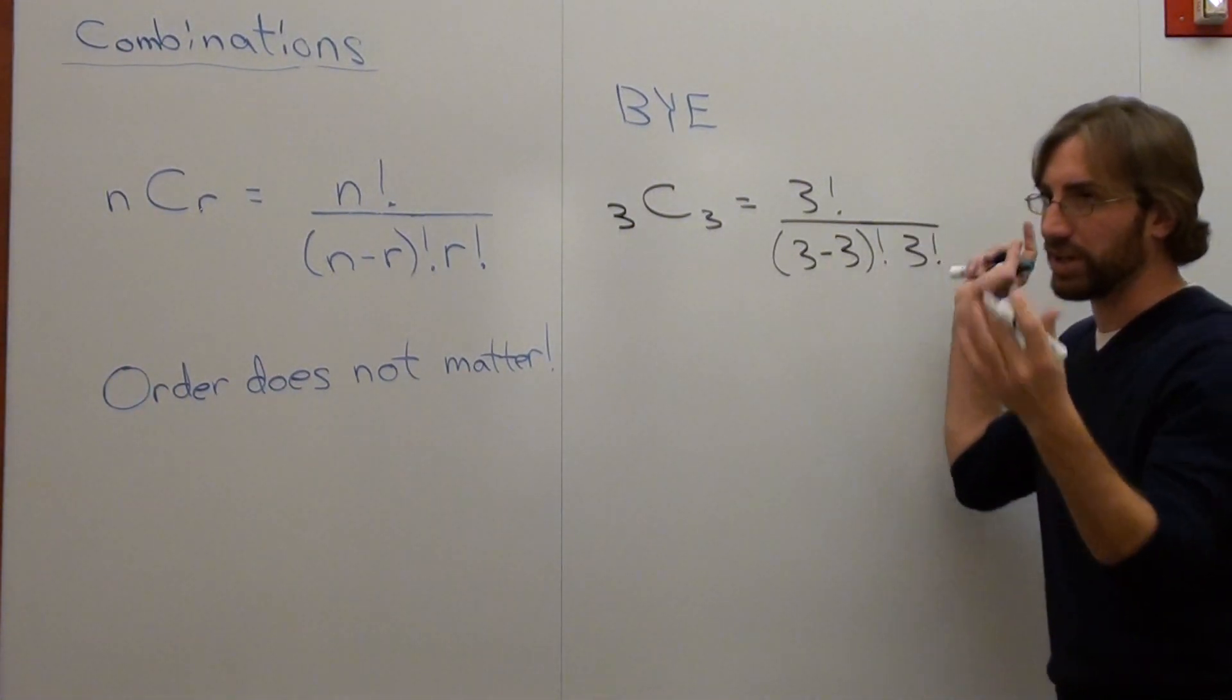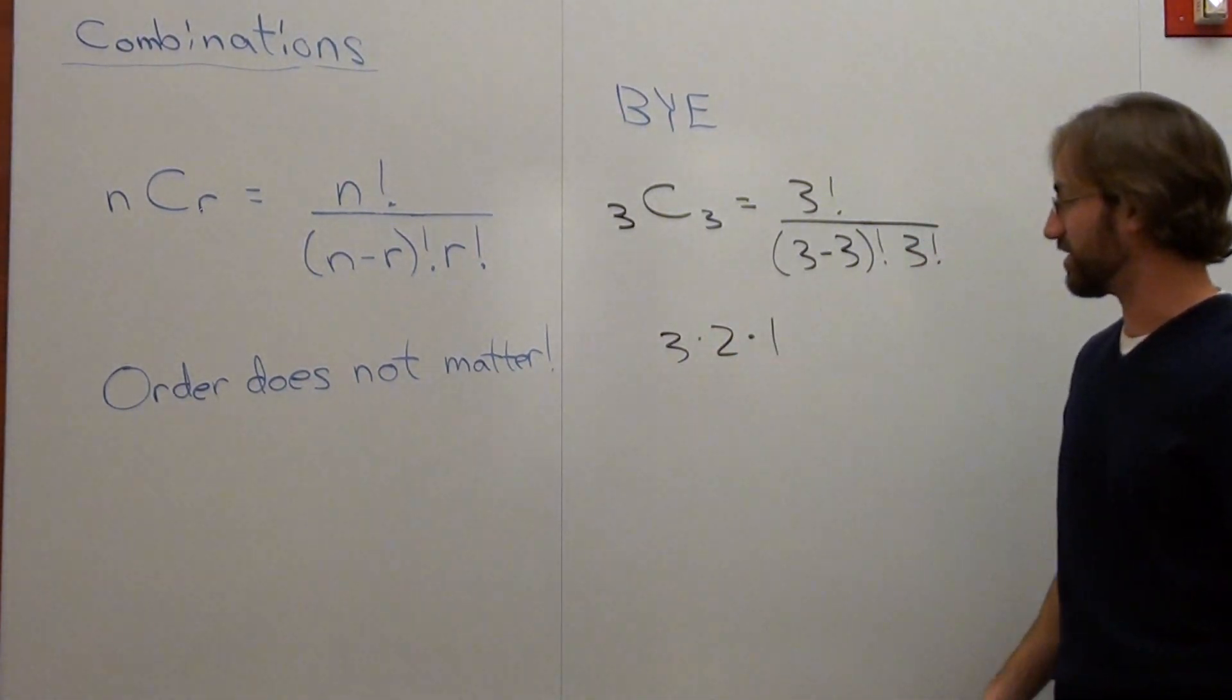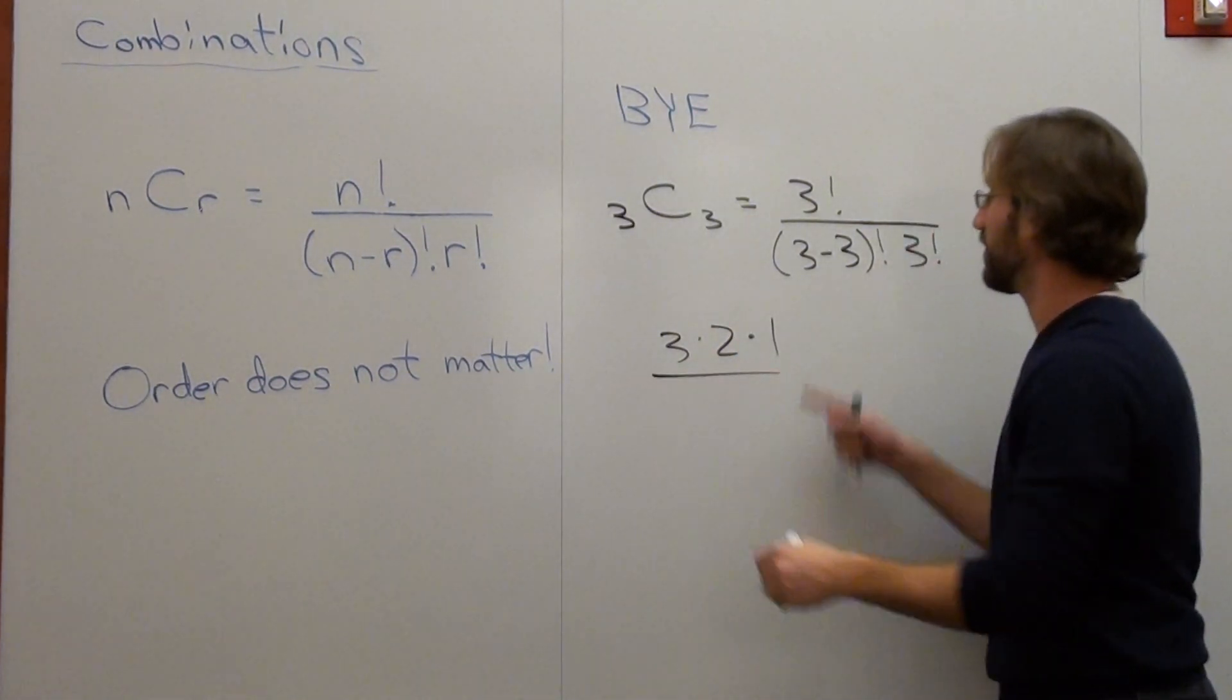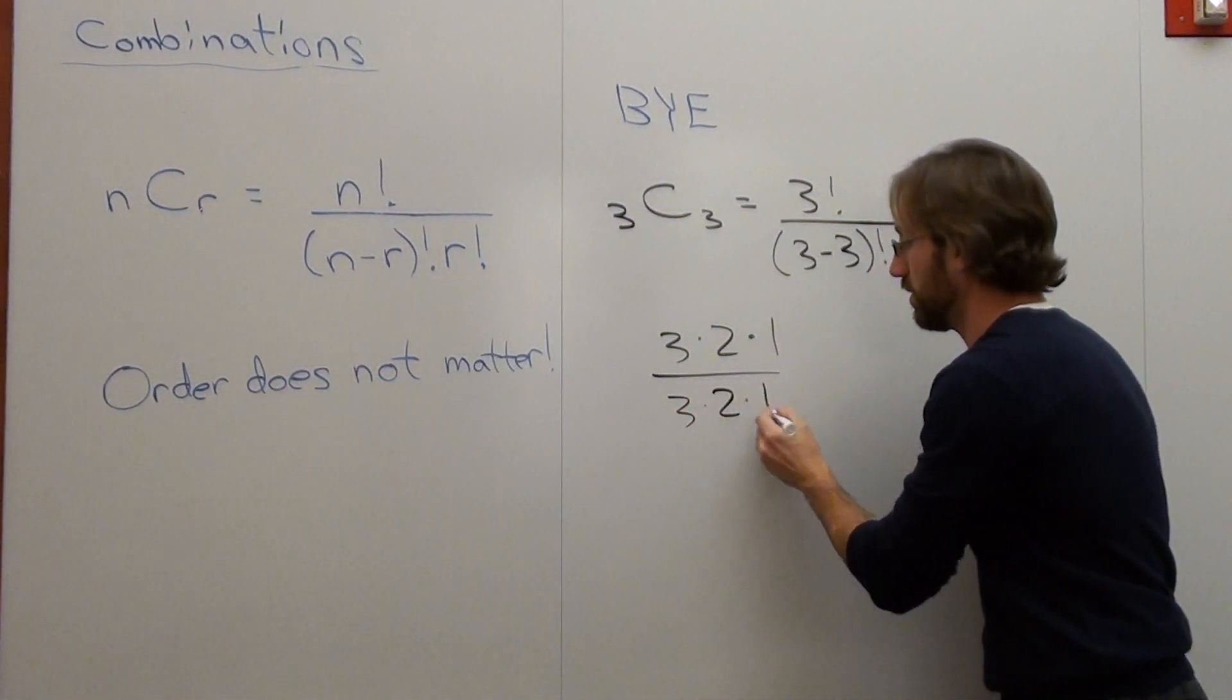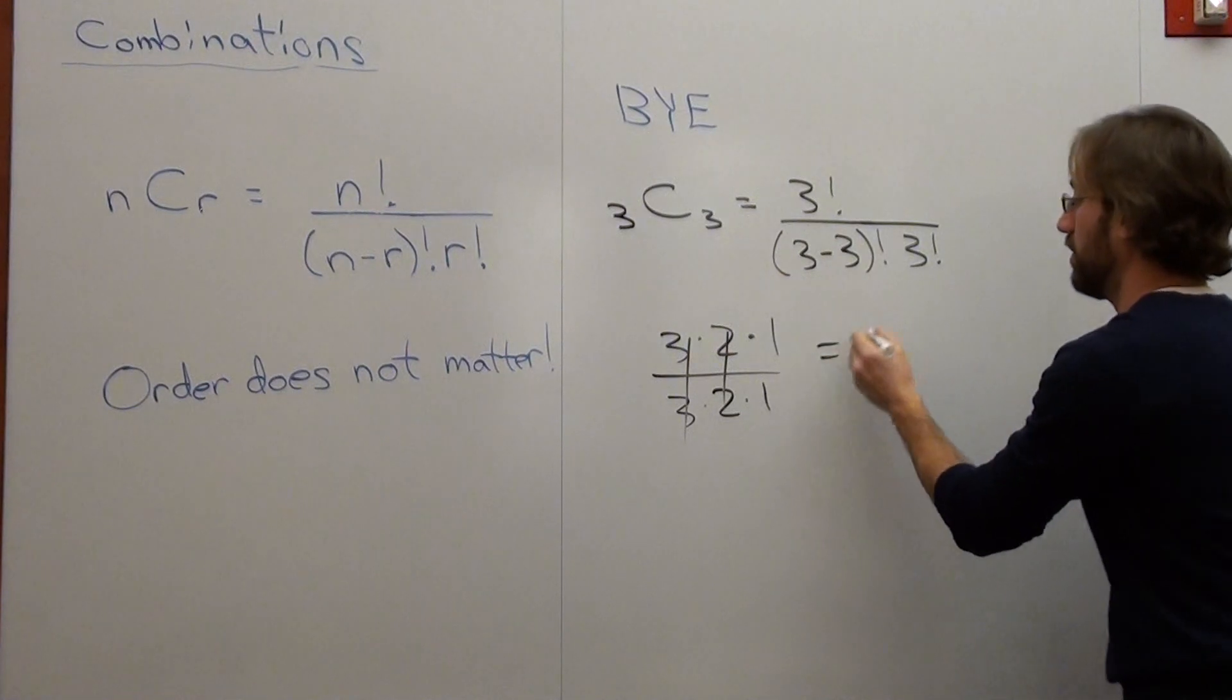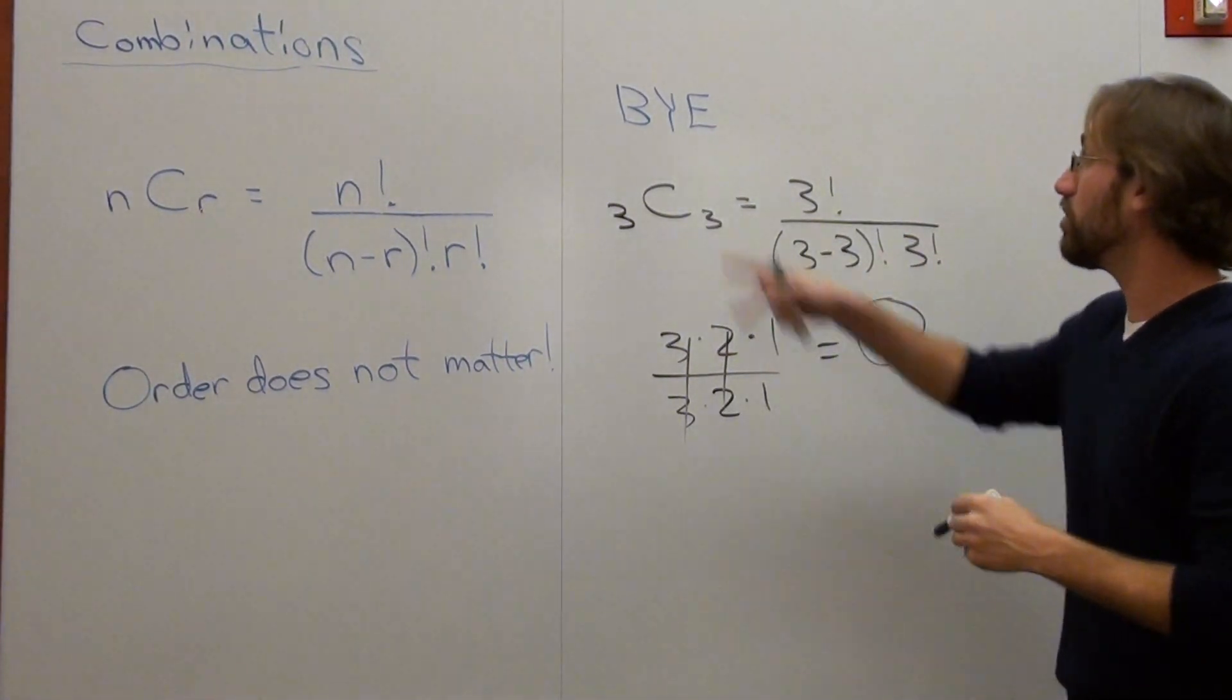Times 3 factorial. So this is just a 1, it's arbitrary. So it's 3 times 2 times 1. Pardon, there's something flying there. Over, that's just 1, over 3 times 2 times 1. Answer is 1. There's 1 possible combination that you can make. And you see that right here.